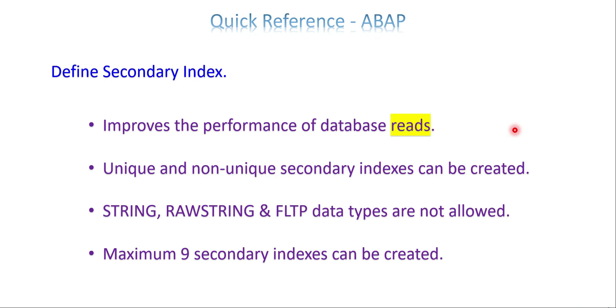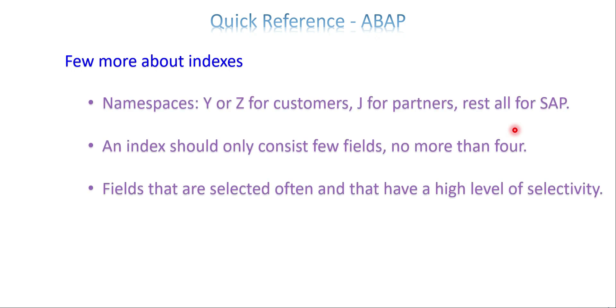A few more about indexes: The namespaces are Y or Z for customers, J for partners, and the rest of the alphabets are for SAP. An index should only consist of a few fields—no more than four. These are recommendations. If you're creating an index, give it a three-digit alphabet name and keep limited fields, not more than four.